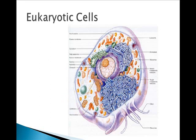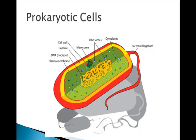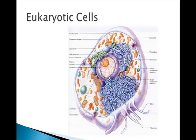Eukaryotic cells contain complex membrane-bound organelles. Note that prokaryotic cells have ribosomes, and so do eukaryotic cells, because ribosomes, which make proteins, do not have a membrane surrounding them. Eukaryotic cells contain complex membrane-bound organelles and have a nucleus enclosed in a membrane. The kingdoms Protista, Fungi, Plants, and Animalia are all eukaryotic.